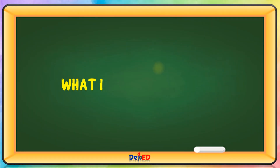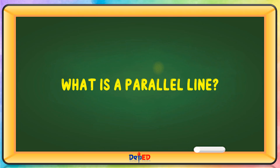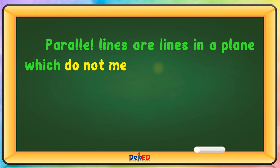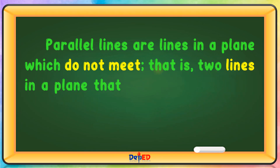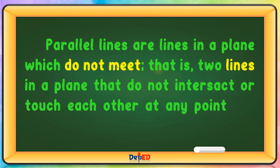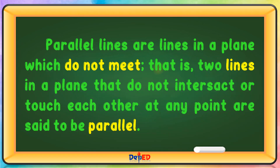What is a parallel line? Parallel lines are lines in a plane which do not meet. That is, two lines in a plane that do not intersect or touch each other at any point are said to be parallel.